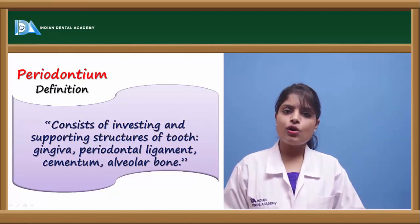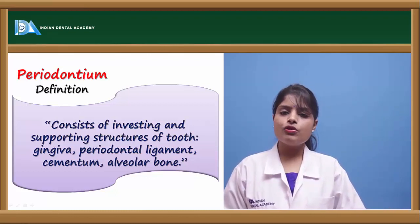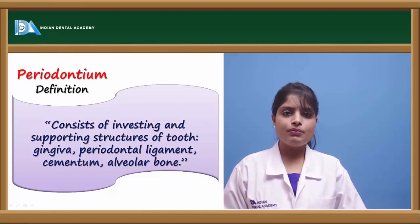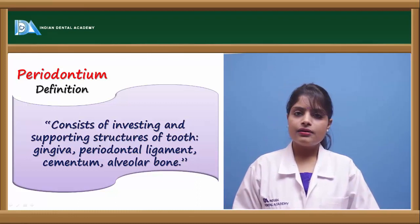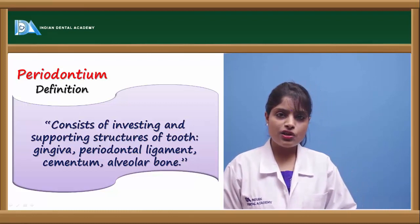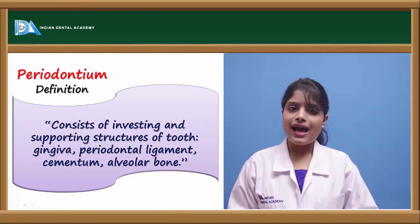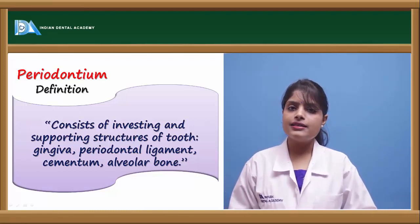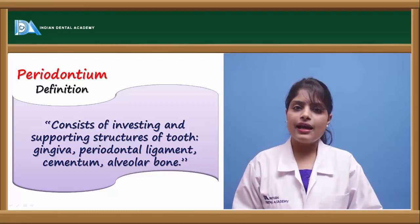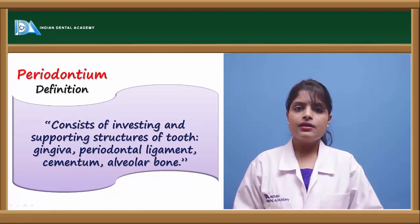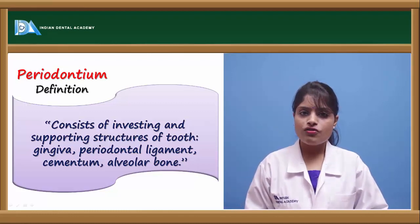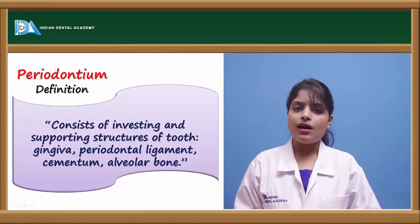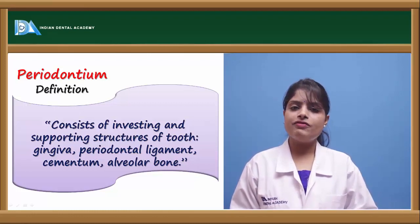The prevalence of gingival diseases in children has been reported to be 99% according to epidemiological studies. The prevalence of periodontal diseases in children is also high, but as compared to adults, the incidence and prevalence of periodontal diseases in children is less. This is because of the slower rate of destruction and the faster rate of production of the periodontal ligament fibers.